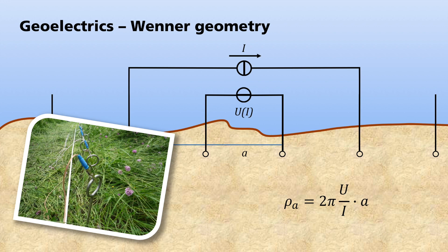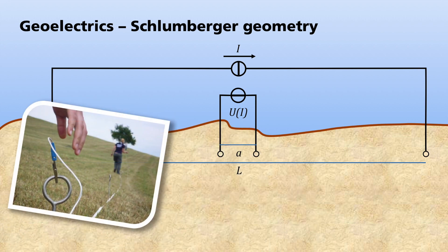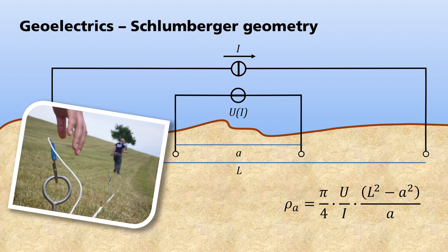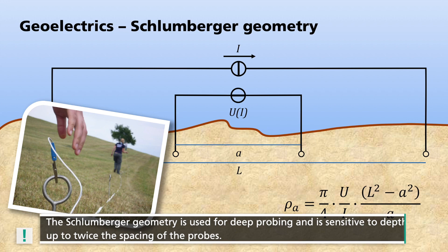This results in measurements at the same spacing along the profile. To calculate a depth profile for the resistivity, the Schlumberger geometry is used. This also uses four electrodes. Unlike the Wenner geometry, the two outer electrodes that supply the current remain fixed at a distance of L. The two measuring probes are variable and arranged symmetrically to the profile center at a distance A. Rho A results from pi over 4 times U divided by I times L squared minus A squared divided by A. After each measurement, only the distance between the two measuring electrodes is changed. The further apart they are, the deeper the subsurface area to which the measuring setup is sensitive. As a rule of thumb, the range from the subsurface up to a depth of about twice the probe distance has an influence on the measurement.